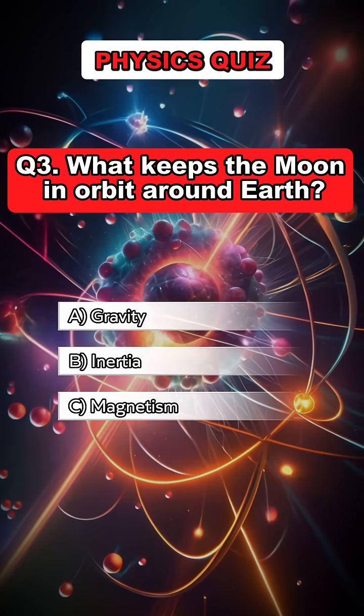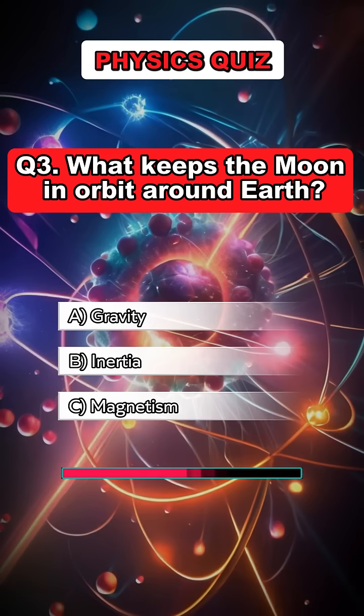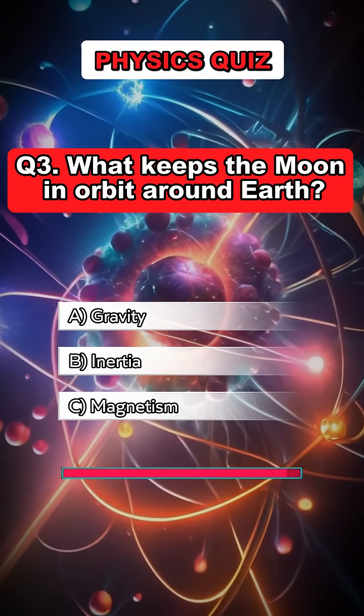Question 3. What keeps the moon in orbit around Earth? Answer A. Gravity.